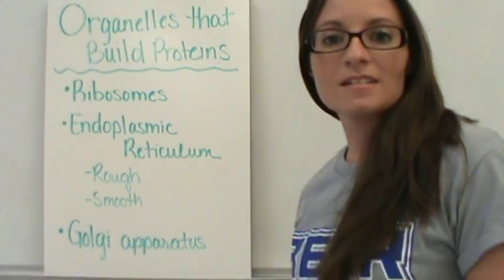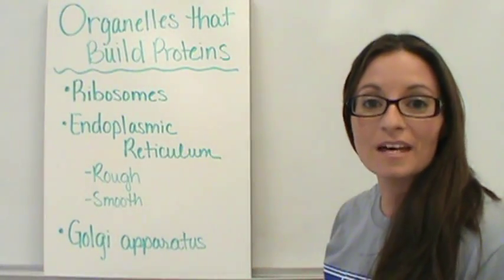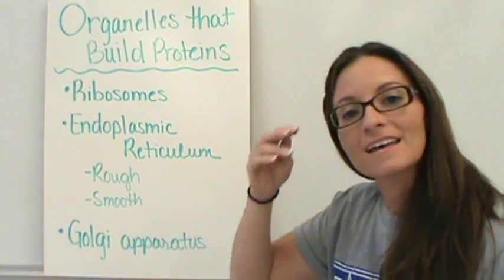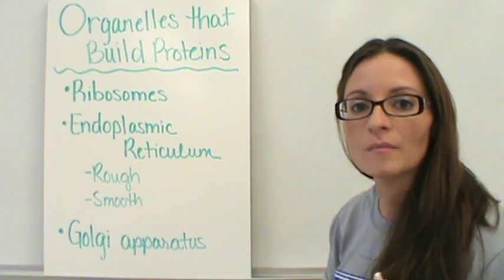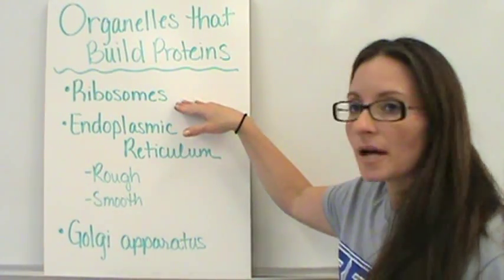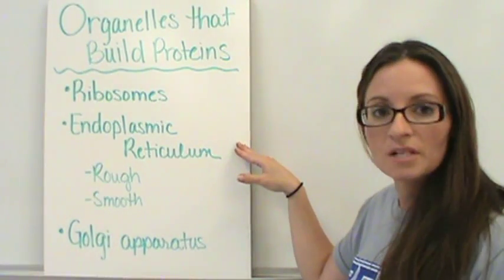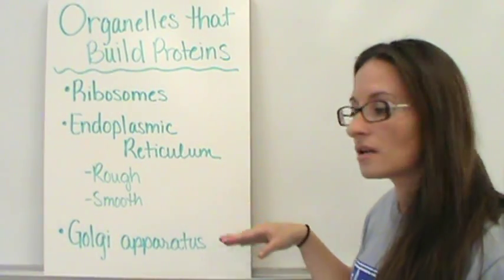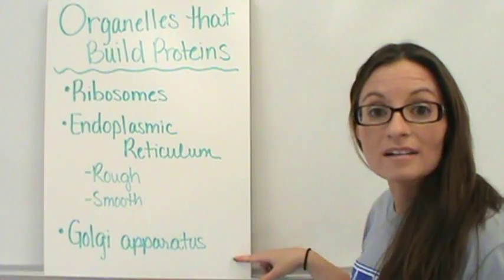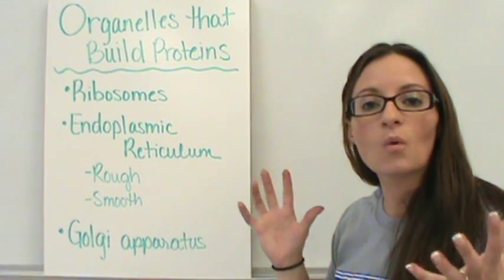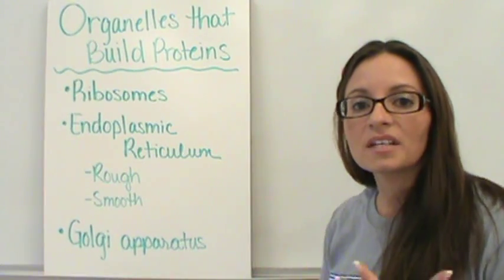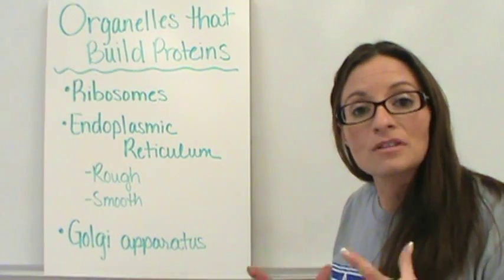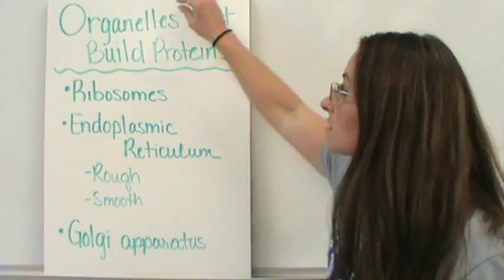Welcome to today's lesson, which is going to discuss organelles that build proteins. Many of you have discussed these three organelles before in lower level classes: ribosomes, the endoplasmic reticulum, both rough and smooth, and the Golgi apparatus. We are going to take a look at what the structure and function of each of these are, what they look like, and then exactly how they work together to build those proteins.